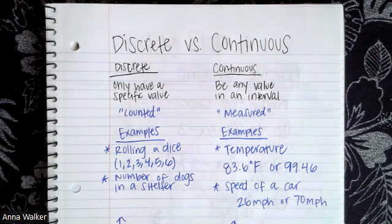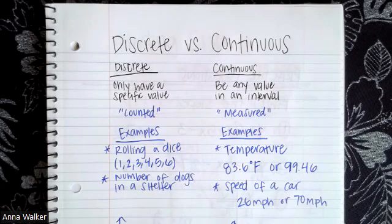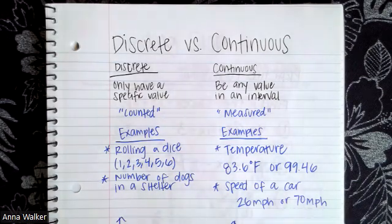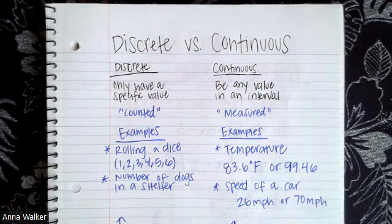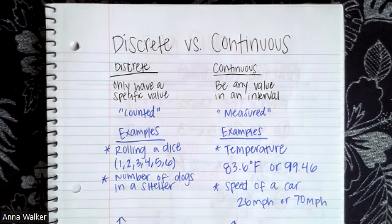Or if I was to look at an animal shelter and count the number of dogs in that shelter, there is a specific number — you can't have part of a dog. It might change day to day, but on one specific day there's a certain number of dogs or cats. So discrete data is data that can be counted. If we did some sort of exercise, like seeing how many lunges you could do in a minute, that's going to be a specific number.